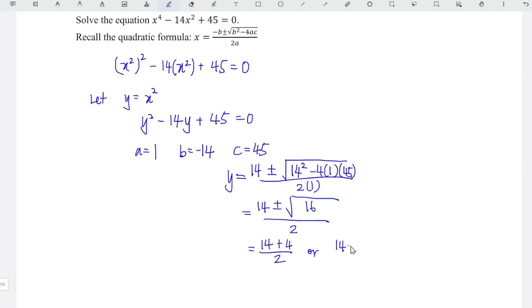or 14 minus 4 over 2, which gives 9 or 5 respectively.